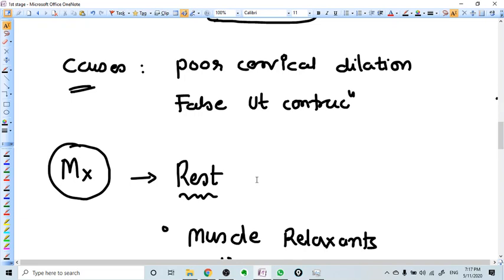When you find that the labor is not true but false labor, you need to give adequate rest to the woman and muscle relaxants like Buscopan.